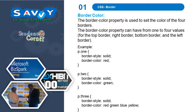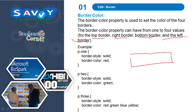So, border color. The border color property is used to set the color of the four borders. The border color property can have from one to four values: top border, right border, bottom border and left border color. So first is top, next is right, bottom and left — it follows that rule.